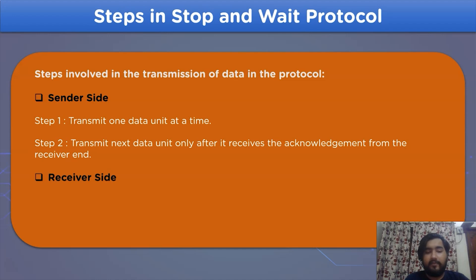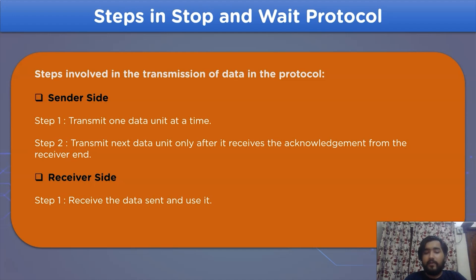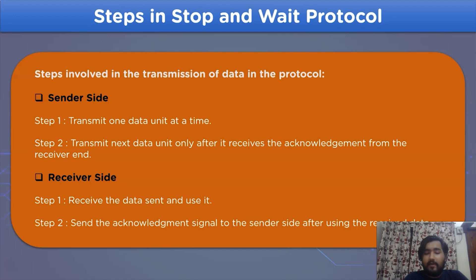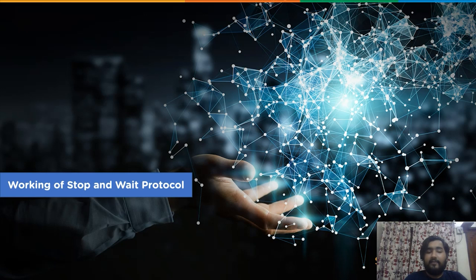On the receiver side, step one is to receive and use the data that is being sent. The second step is: after the data has been used by the receiver side, it will send the acknowledgement to the sender side for further data transmission.